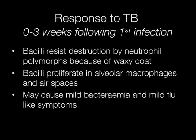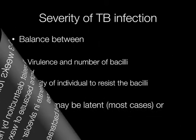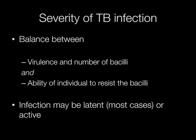The problem with TB is that the bacilli have waxy coats making them resistant to destruction by neutrophil polymorphs in the primary infection in the first three weeks. The bacilli proliferate in the alveolar macrophages and air spaces and this may cause a mild bacteremia and mild flu-like symptoms. The severity of TB infection is a balance between the virulence and the number of the bacilli and the ability of the individual to resist the bacilli. Infection may be latent or active but in the majority of cases infection is latent.